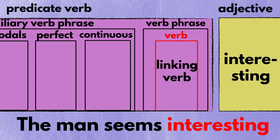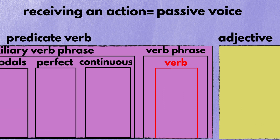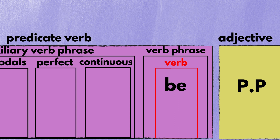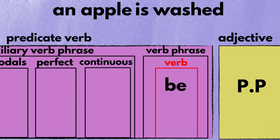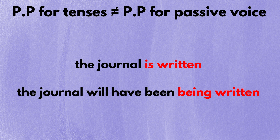The reason why I tell you this is that receiving an action is also considered a condition, and such conditions require a special verb form which many people confuse with tenses. The condition of receiving an action is called the passive voice. To use the passive voice, we must put be in the verb and put the pp form of a verb in the adjective position. For instance, if an apple is receiving a washing action, you say an apple is washed. The word is is a be verb and washed is the pp of the verb wash. Be aware that the pp used in passive voice has nothing to do with tenses.